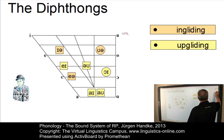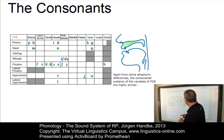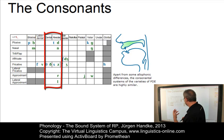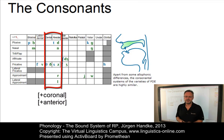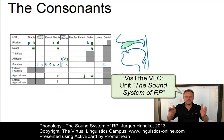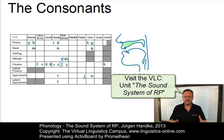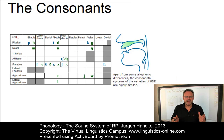Here are the consonants. The consonantal system of RP clearly exhibits a concentration of consonants in the alveolar — or anterior coronal — region. To study all consonants with their allophones, the Virtual Linguistics Campus unit on the sound system of RP is recommended, where all consonantal phonemes can be accessed with sound samples and their precise allophonic structure.